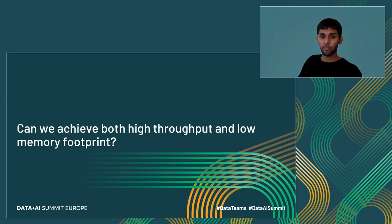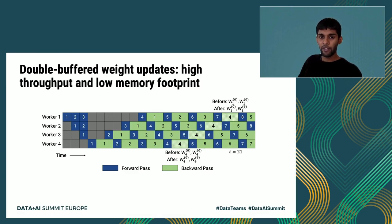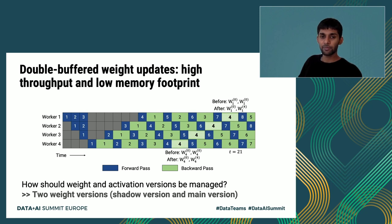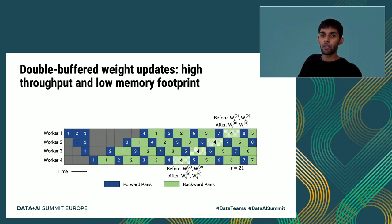In follow-up work to Pipedream, we tried to achieve the best of both worlds — high throughput and low memory footprint — using a technique called double buffered weight updates (2BW). With 2BW, instead of the number of weight versions being linear in the pipeline depth, we only maintain two weight versions: a shadow version and a main version. This ensures that Pipedream can still train large models that do not fit on a single worker. The key insight is that weight updates do not need to be applied as soon as they are generated; instead, weight updates can be aggregated into single larger weight updates, limiting the total number of weight versions needed.